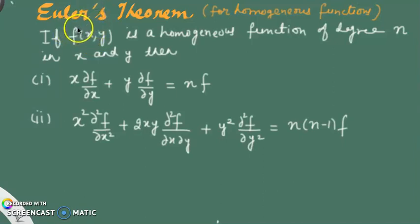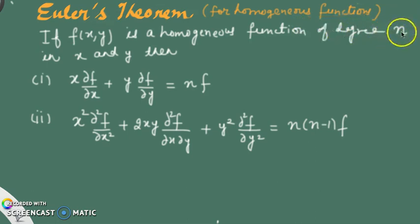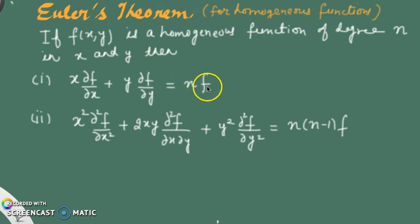Hello all, today I am going to discuss one of the important results of homogeneous functions, named Euler's theorem. This theorem says that if we take a homogeneous function f of degree n in x and y variables, then x times the partial derivative of the function with respect to x, plus y times the partial derivative with respect to y, is equal to n times f.